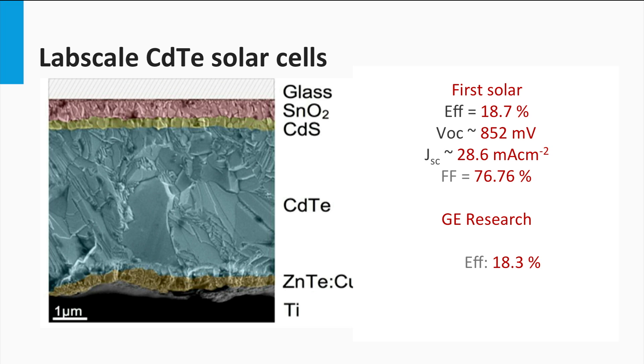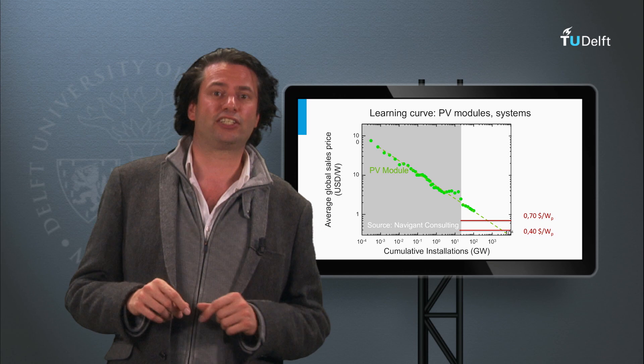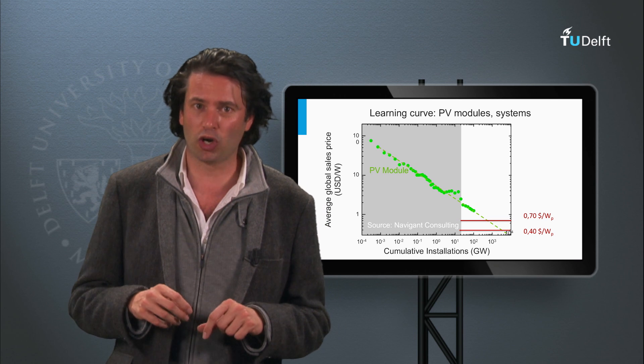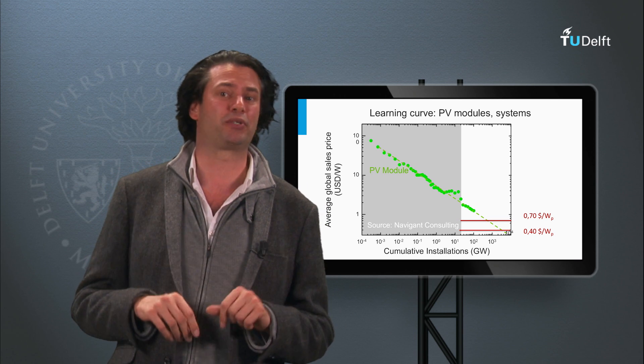General Electric achieved in the same year an efficiency of 18.3 percent. NREL has confirmed a new record conversion efficiency for a cadmium telluride solar module of First Solar of 16.1 percent.